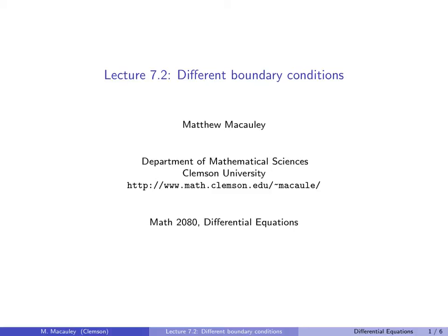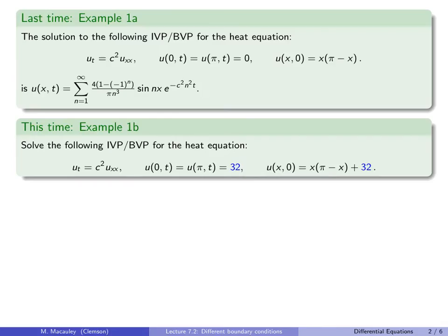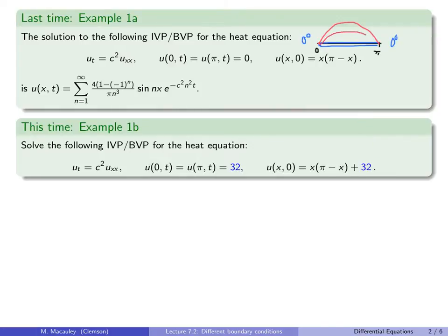Welcome to lecture 7.2, Different Boundary Conditions. Last time we had an initial boundary value problem for the heat equation. We had a bar of length pi, which made the math a little bit easier, and it was insulated on the endpoints, stuck in a room that was zero degrees, and the initial temperature was given by a parabola. Heat would escape over time, and eventually the temperature would approach zero degrees.